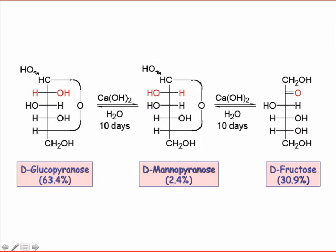When you subject a solution of a monosaccharide to strong base, isomerization reactions occur to generate a mixture of different sugars. For the particular example of D-glucose, we observe a mixture of glucose, the C2 epimer mannose, and fructose in the ratio you see here.